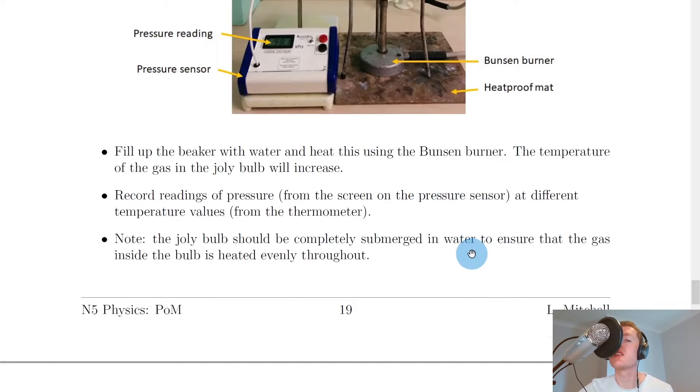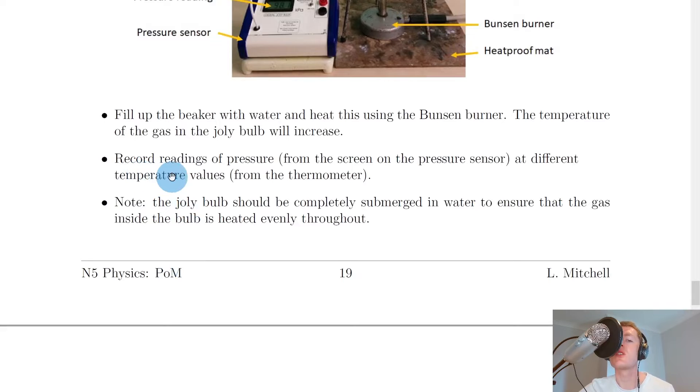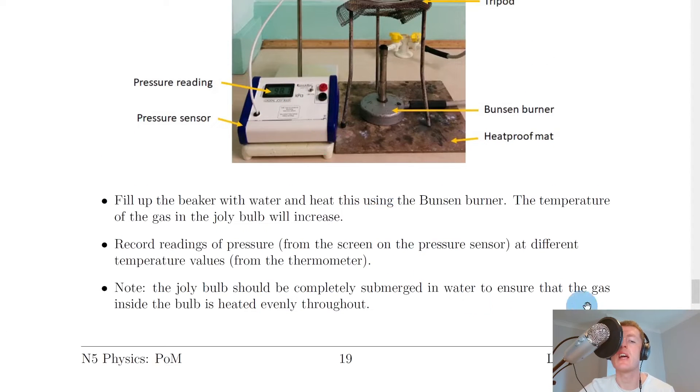So here's the important part that you need to be able to describe in an exam. So firstly you would fill up the beaker with water and heat this using the Bunsen burner. The temperature of the gas in the jolly bulb will increase as expected. So you would fill up this beaker of water near to the top and you would turn on the Bunsen to a blue flame in order to heat up your water.